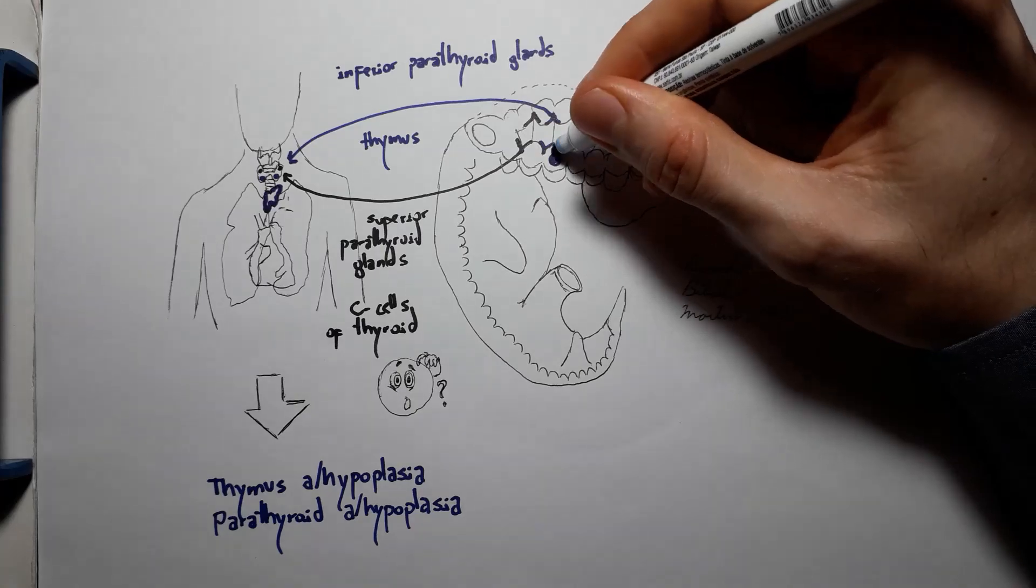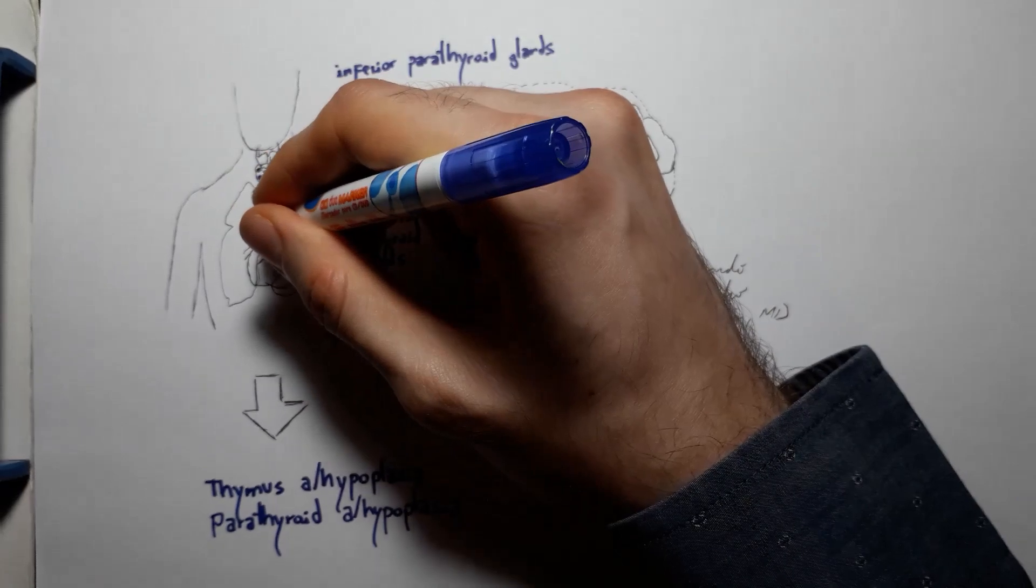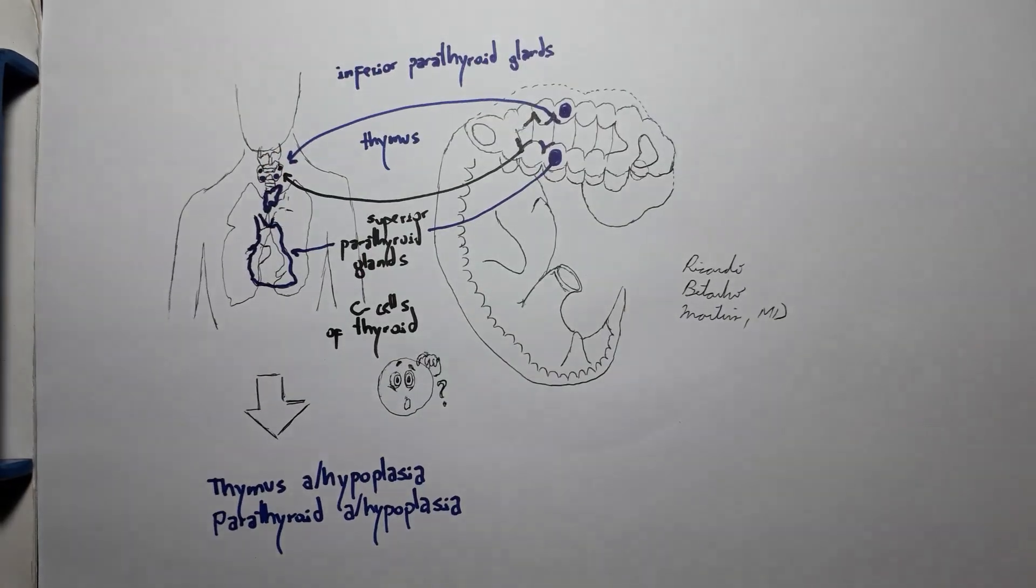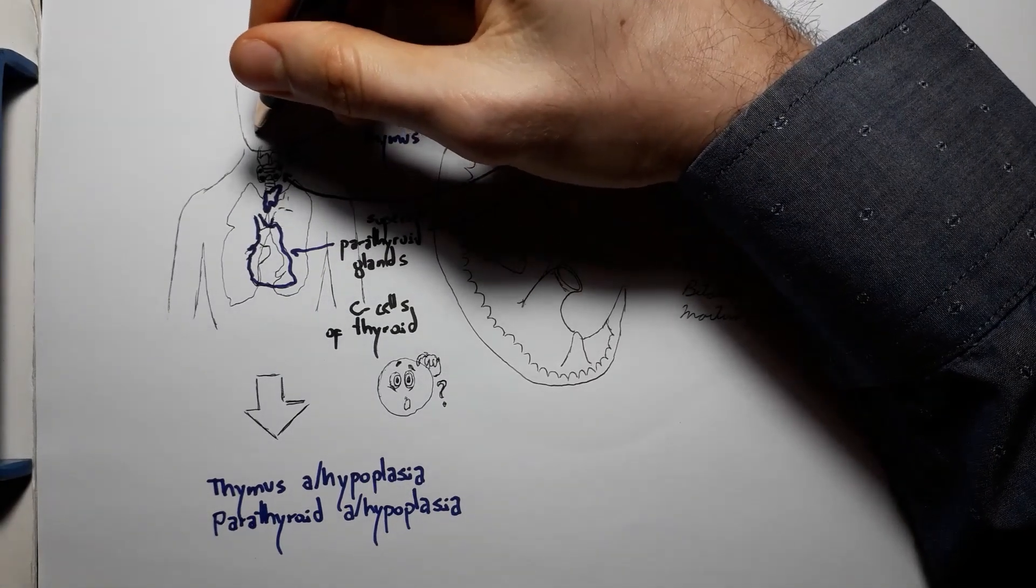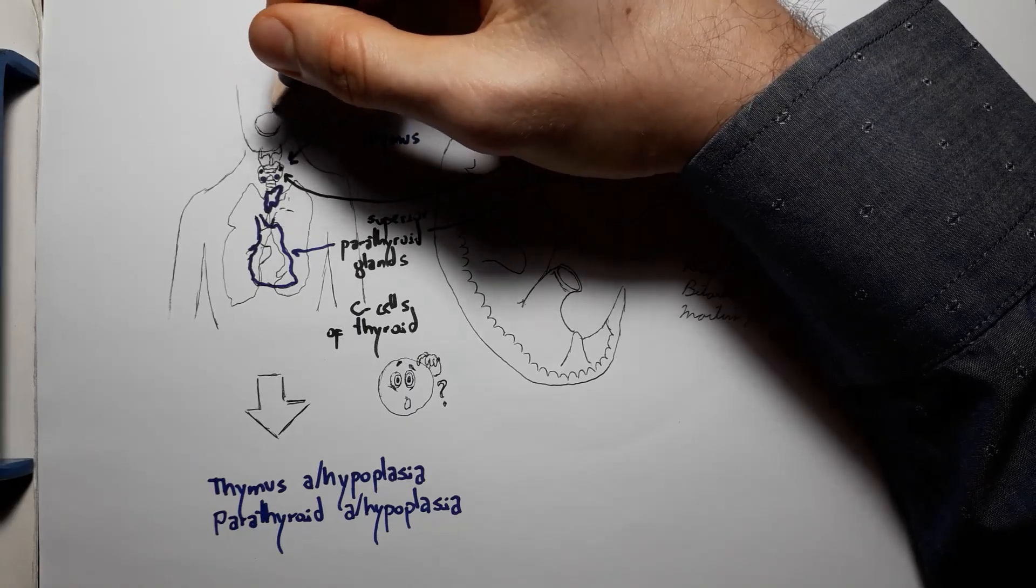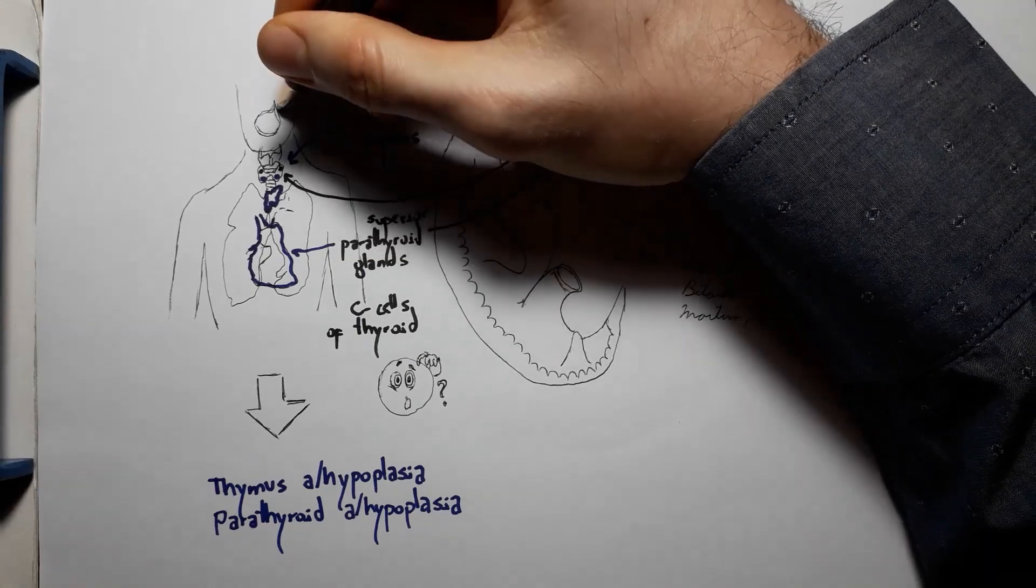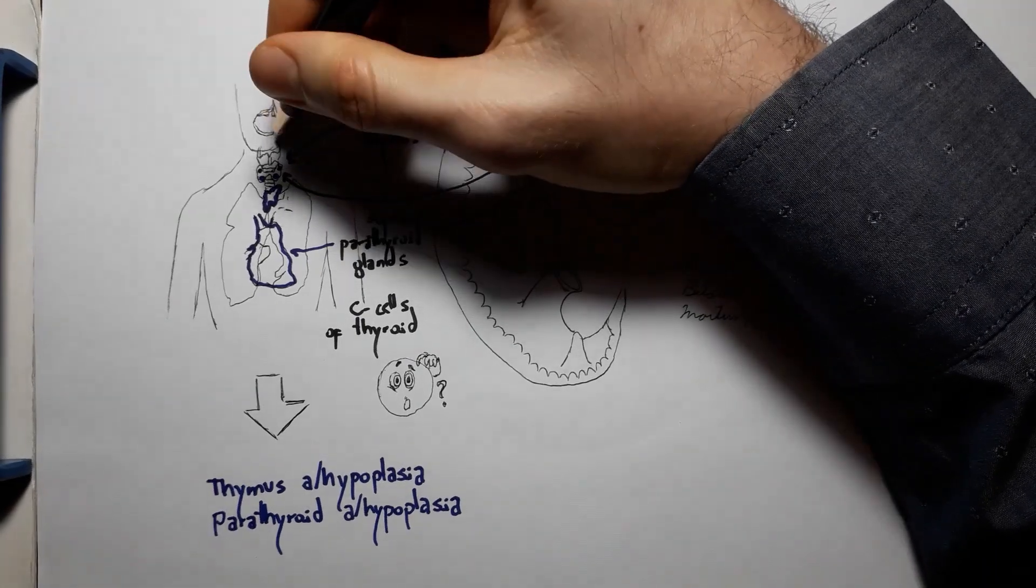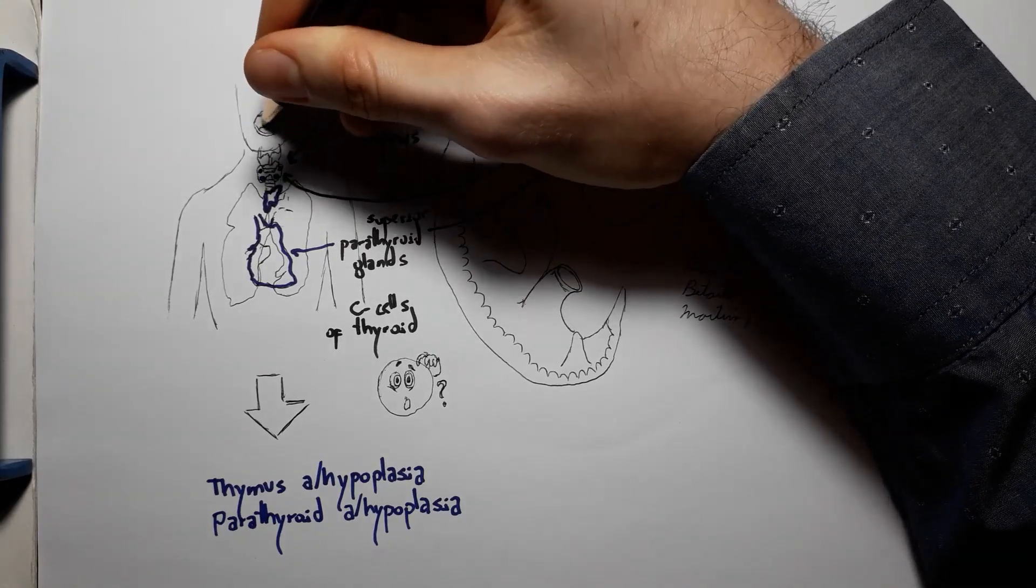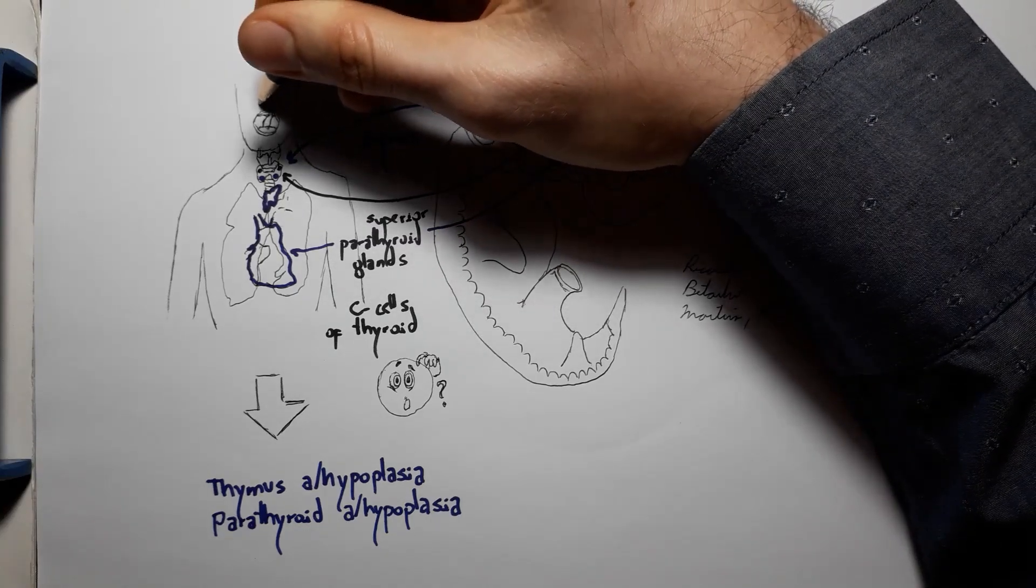Because the third and fourth pharyngeal arches, which are associated with the third and fourth pharyngeal pouches, will eventually form the carotid arteries, the right subclavian artery and the arch of the aorta, as well as the soft palate, five muscles of the pharynx, and some cartilages, you can also present with abnormalities or malformations of the heart and great vessels in up to 74 to 80% of cases, and also face malformations such as cleft palate.